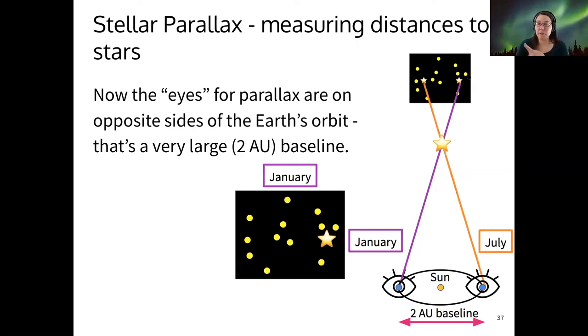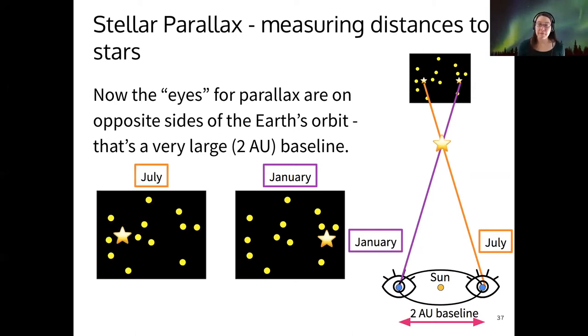It would have appeared to shift in the sky, not because the star moved, but because the Earth is now viewing that star from a different angle. So nearby stars will appear to shift against a fixed background of much farther away stars.